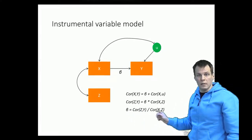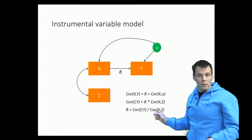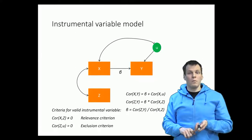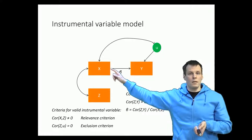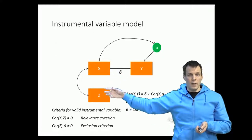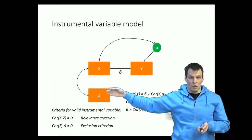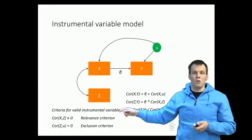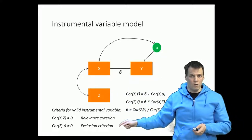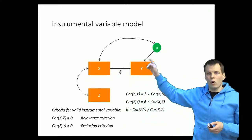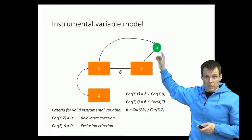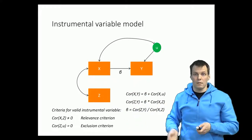A variable z qualifies as an instrumental variable if it meets two criteria. First, it must have relevance for x — x and z must be correlated — and that can be checked empirically by calculating the correlation and doing a statistical test. Then there is the exclusion criterion, which has to be argued based on theory, because we don't observe u and can't test whether z and u are uncorrelated. That is difficult to do.